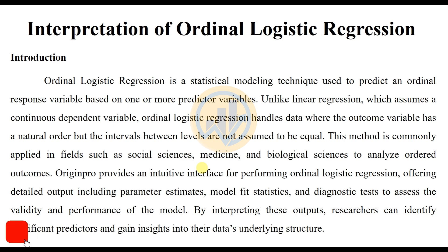The ordinal logistic regression is a statistical modeling technique used to predict an ordinal response variable based on one or more predictor variables. Unlike linear regression, which assumes a continuous dependent variable, ordinal logistic regression handles data where the outcome variable has a natural order but the intervals between levels are not assumed to be equal. This method is commonly applied in fields such as social science, medicine, and biological science to analyze ordered outcomes.